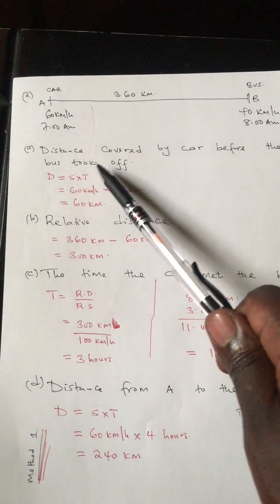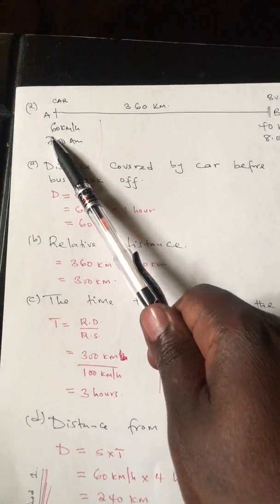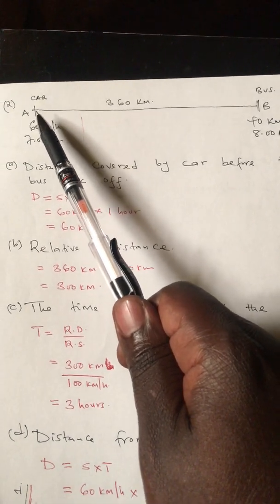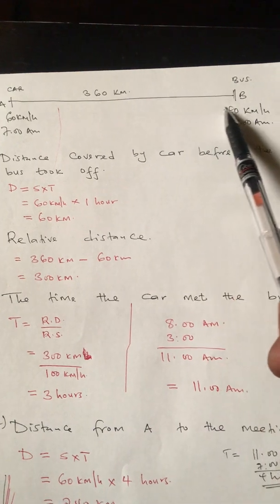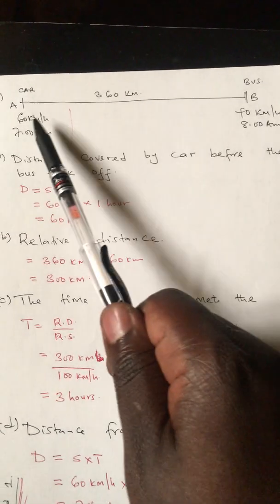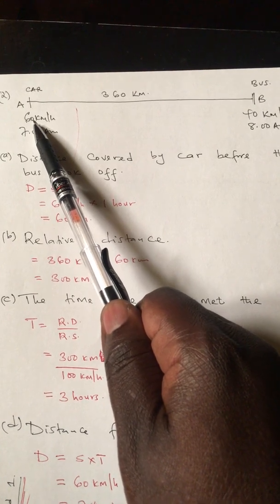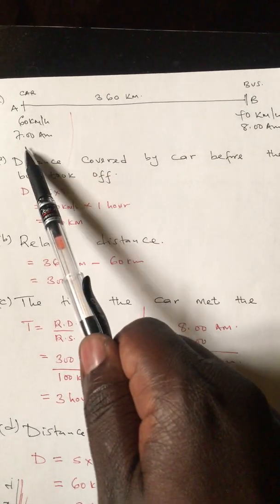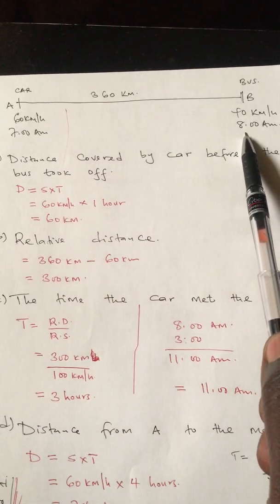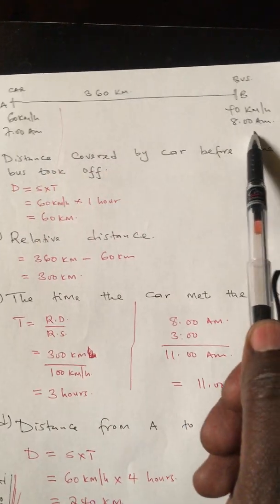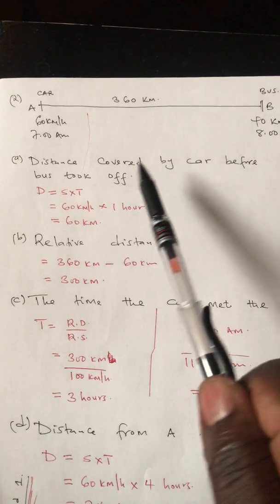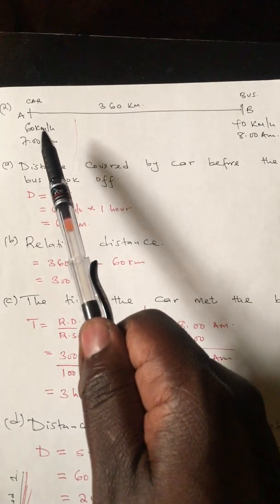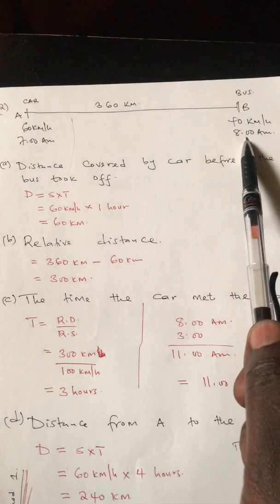The second example is still on approaching bodies, just like the other question. But in this case, notice that the two points A and B have speeds: speed from A is 60 kilometers per hour, speed from B is 40 kilometers per hour. Time from A is 7 a.m., time from B is 8 a.m. — and that's where the difference is: a difference in time, unlike the first question where the departure times were the same.